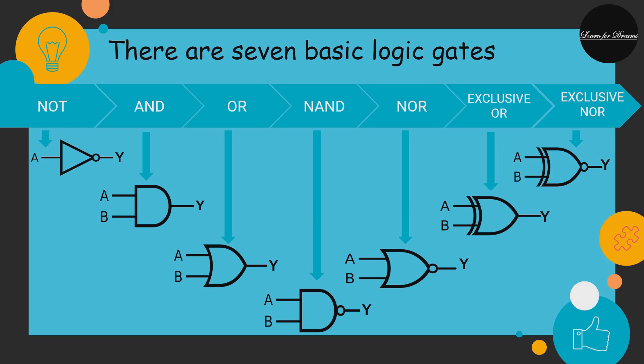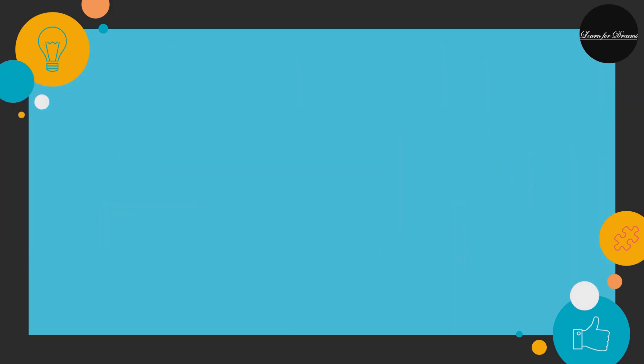Before moving toward the gates, you have to know the meaning of a bar or the line which is present above a letter. It means whatever the input is, the output should be opposite or reverse of that. If the input is 1, then the output will be 0, and if the input is 0, then the output will be 1.